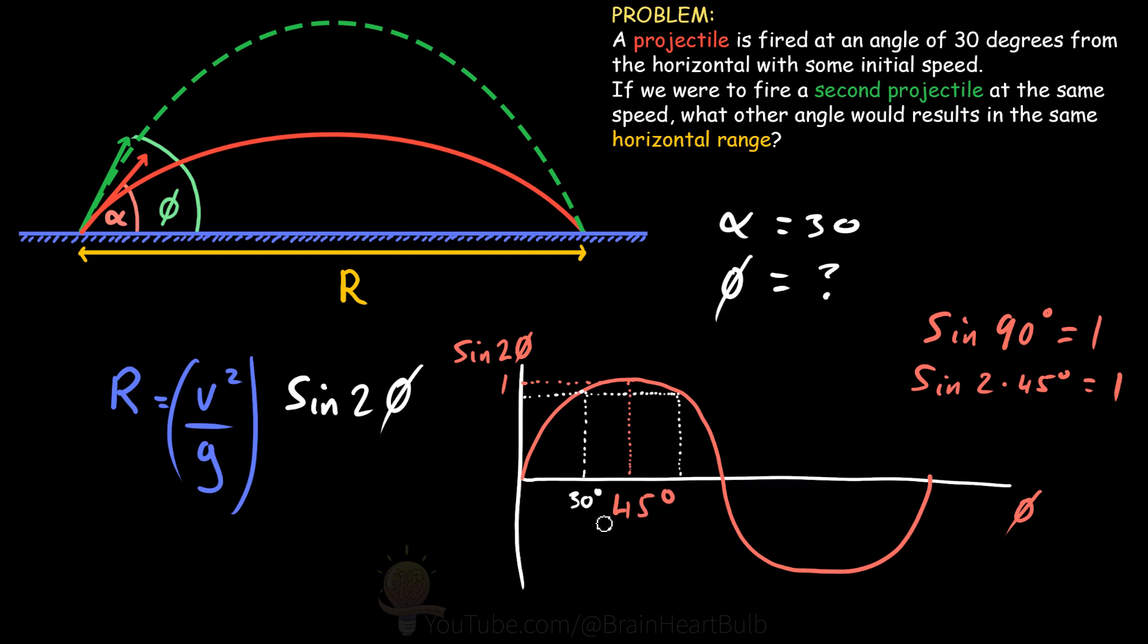Now 30 is 15 degrees away from the peak of this curve. If we add 15 degrees on top of 45, we get a value of 60. So this means that the final answer to this question is 60 degrees.